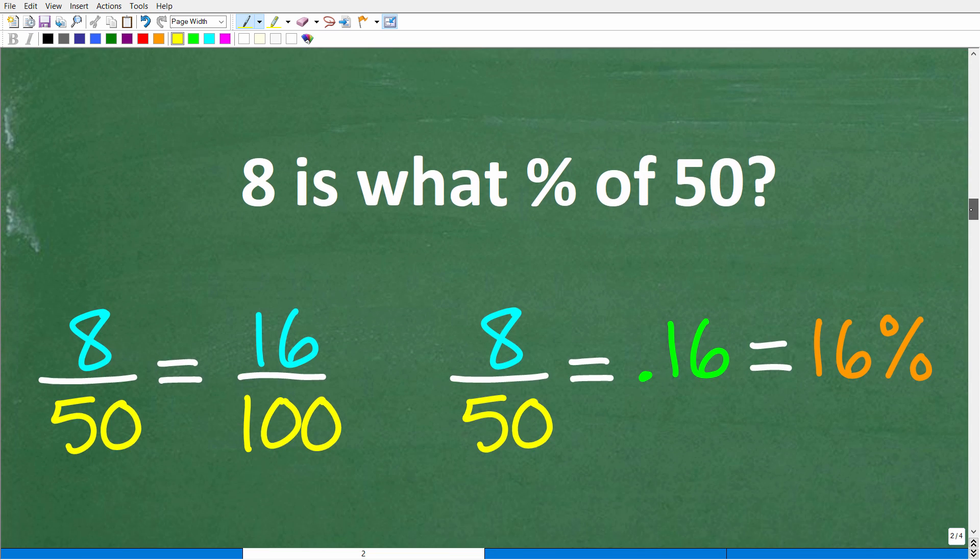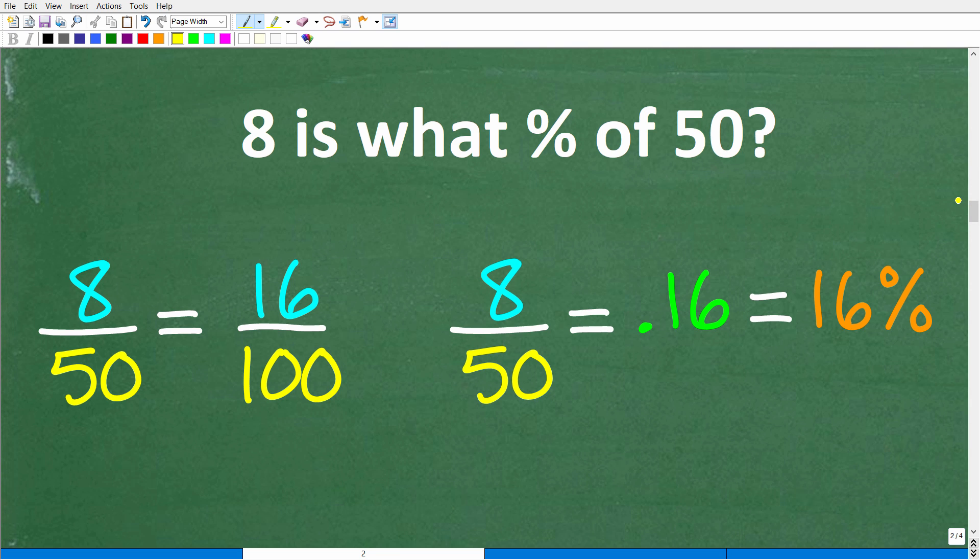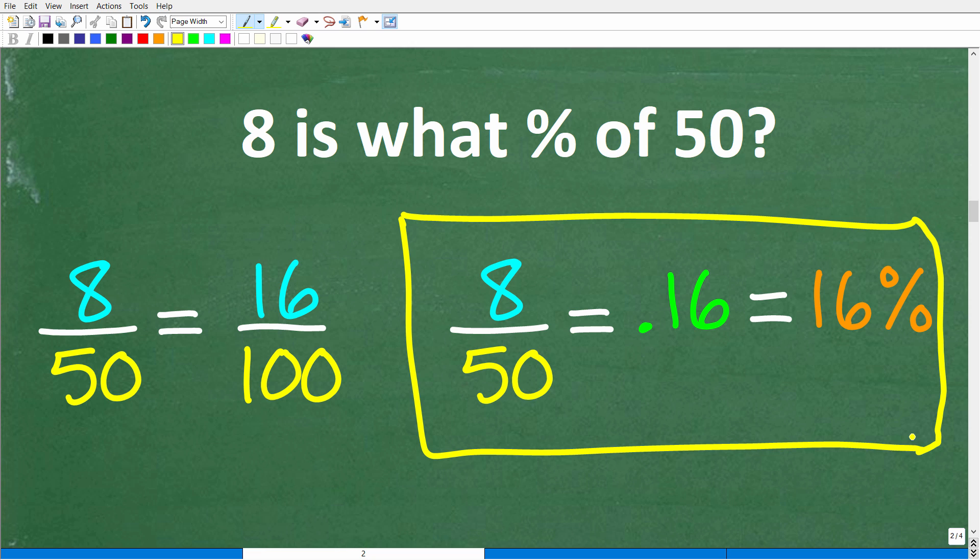Now we can use this knowledge to solve the problem in another way. So 8 is what percent of 50? Let's do it the long way, then I'll show you the easy way without a calculator in just one second. So 8 is what? This is the part, and this is the whole. We're going to compare the part over the whole. So 8 over 50, so we take 8 divided by 50 in our calculator. We're going to get 0.16. And then we can multiply it by 100 or move the decimal point over two places to the right. We get 16%, which is the right answer.